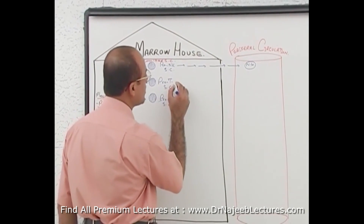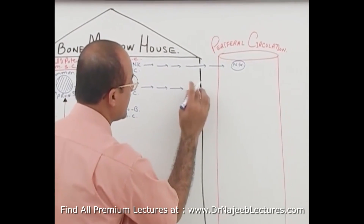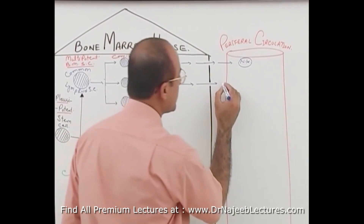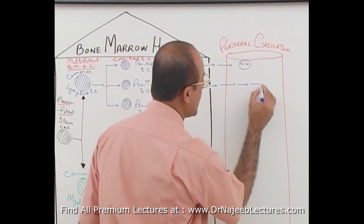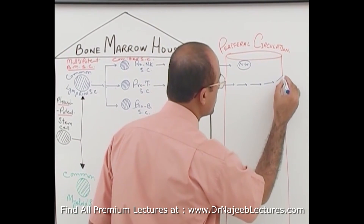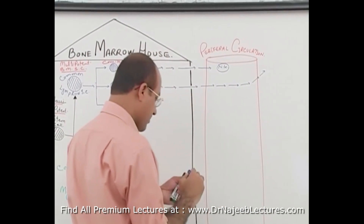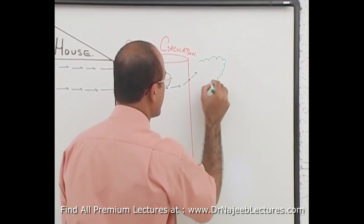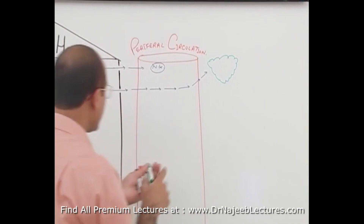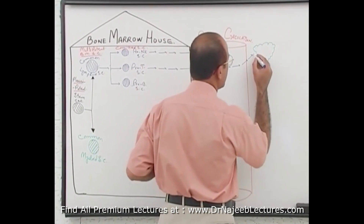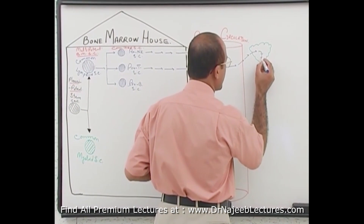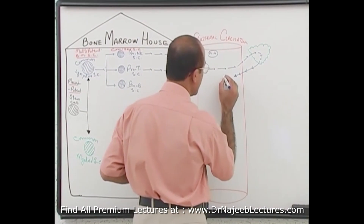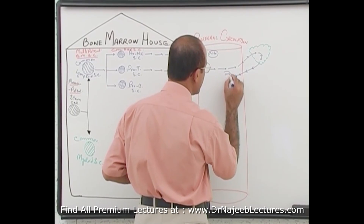Pro-T cells differentiate, and the immature cells derived from them go into peripheral circulation, where they get mature in the thymus. These naive T cells go into the thymus, are trained there, and after maturity they come back into circulation.